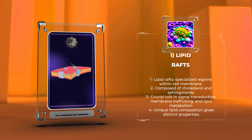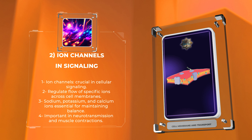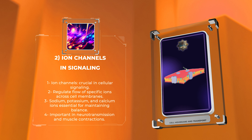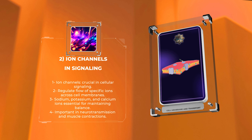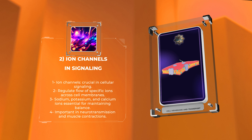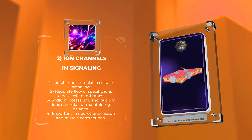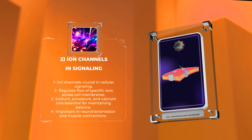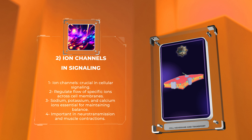Ion channels play a crucial role in cellular signaling by allowing the passage of specific ions across cell membranes. These vital proteins regulate the flow of ions such as sodium, potassium, and calcium, which are essential for maintaining the electrochemical balance and controlling various cellular processes. Signaling events such as neurotransmission and muscle contractions heavily rely on the precise functioning of ion channels.